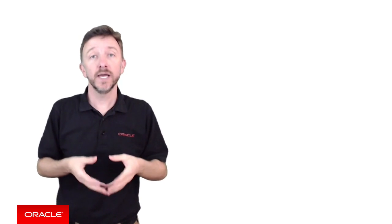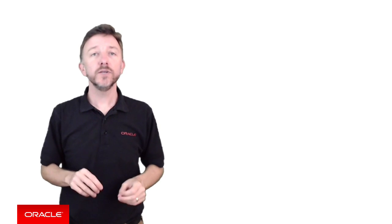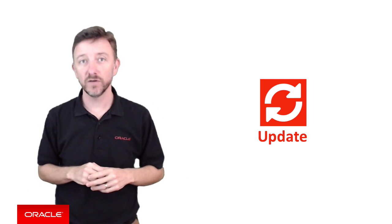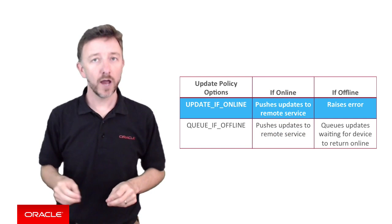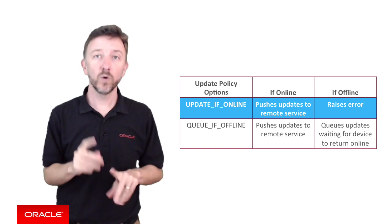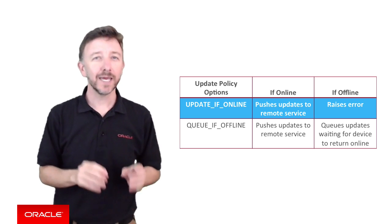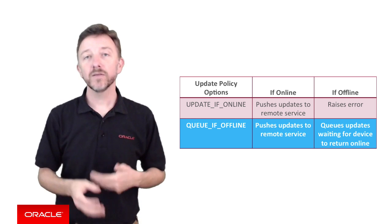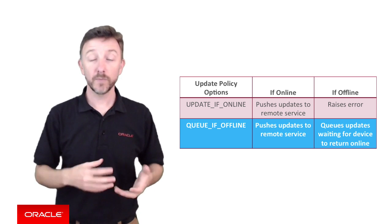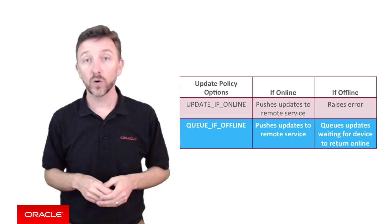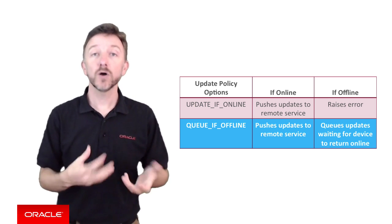Some mobile applications allow users to update data fetched from the server in the locally cached data. The update policy deals with how changes to that data in the local cache are saved back to the server. Update if online pushes updated objects straight to the server if the device is online; if offline, it raises an error you must handle. The queue if offline option is more forgiving — if the user updates cached objects while offline, it queues all those updates, and when the device returns online it sends one batch sync call with all the updates to MCS.